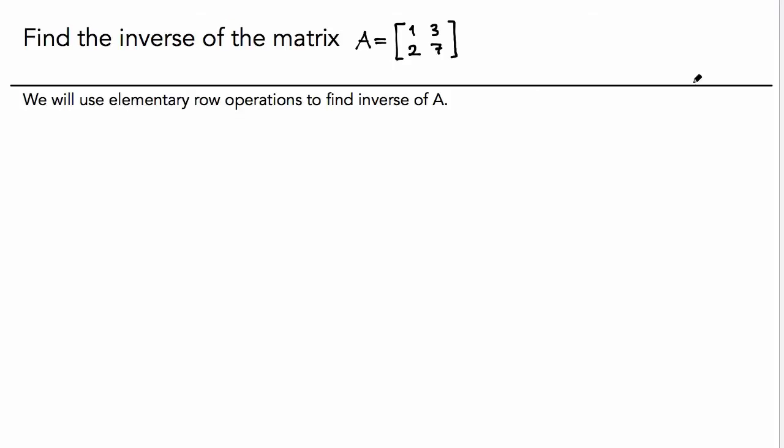So, how are we going to do it? We write the matrix A here. Next to it, we put the identity matrix. The idea here is this: we write the matrix A, next to it we write the identity matrix.